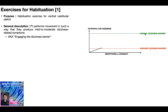The green line represents the normal dizziness barrier for a healthy individual who does not have a central vestibular deficit. The red line represents the impaired dizziness barrier for somebody who does have a central vestibular deficit. The horizontal axis represents the number of repetitions, intensity, or duration of the movement. The diagonal black line represents that as we increase repetitions, duration, or intensity, we get an increased potential for dizziness — that's the vertical axis.